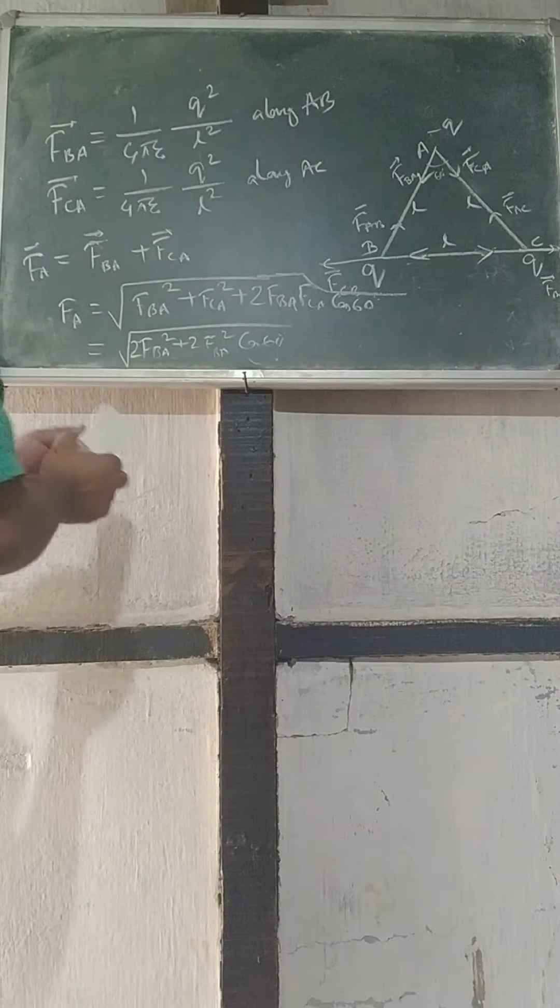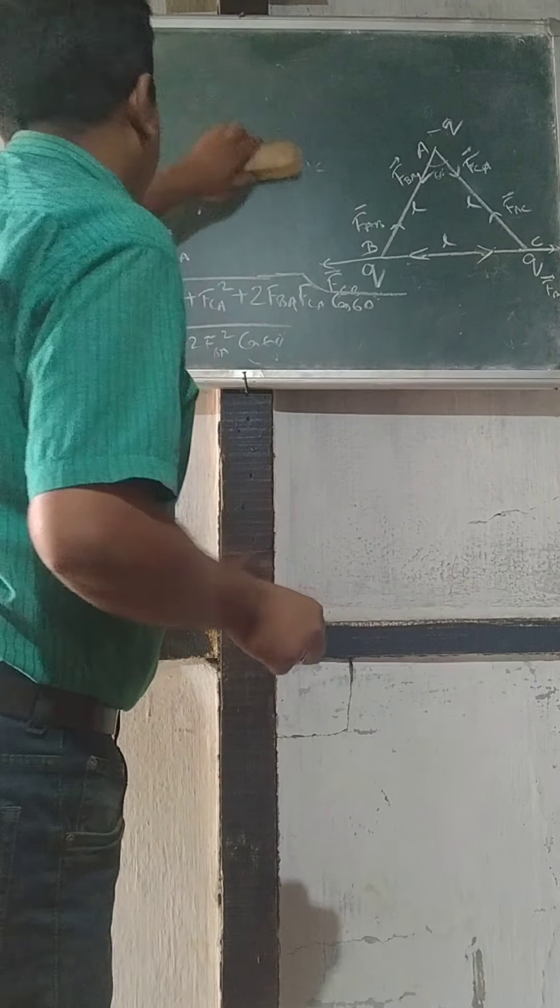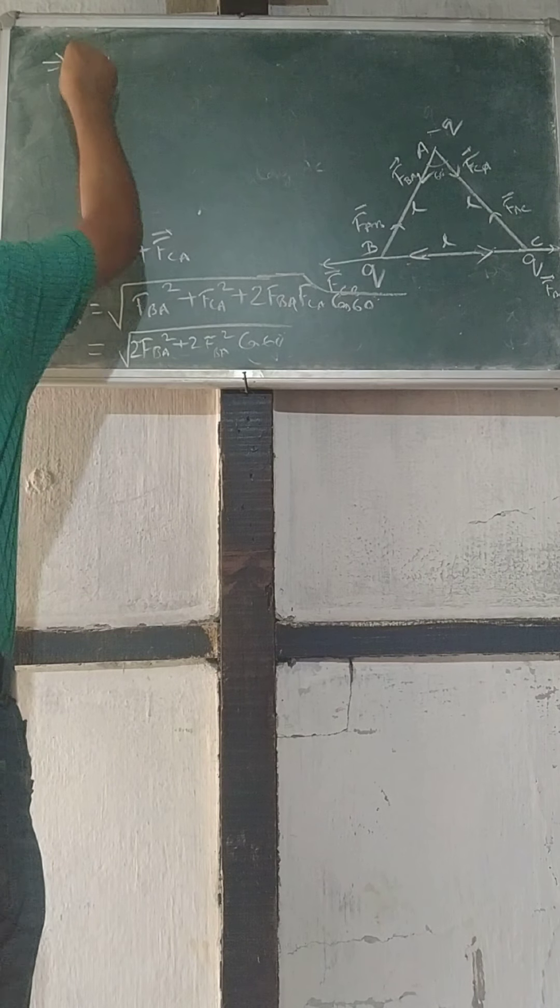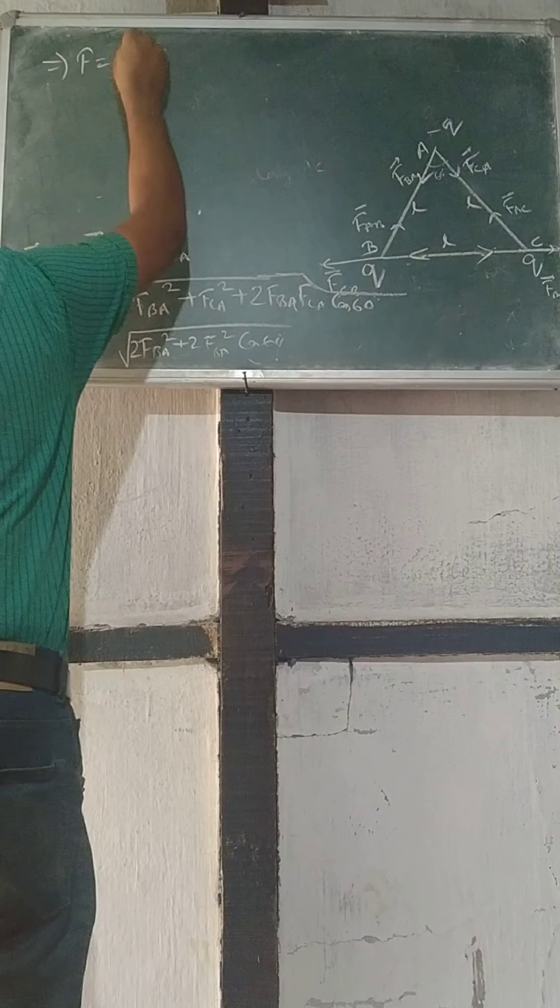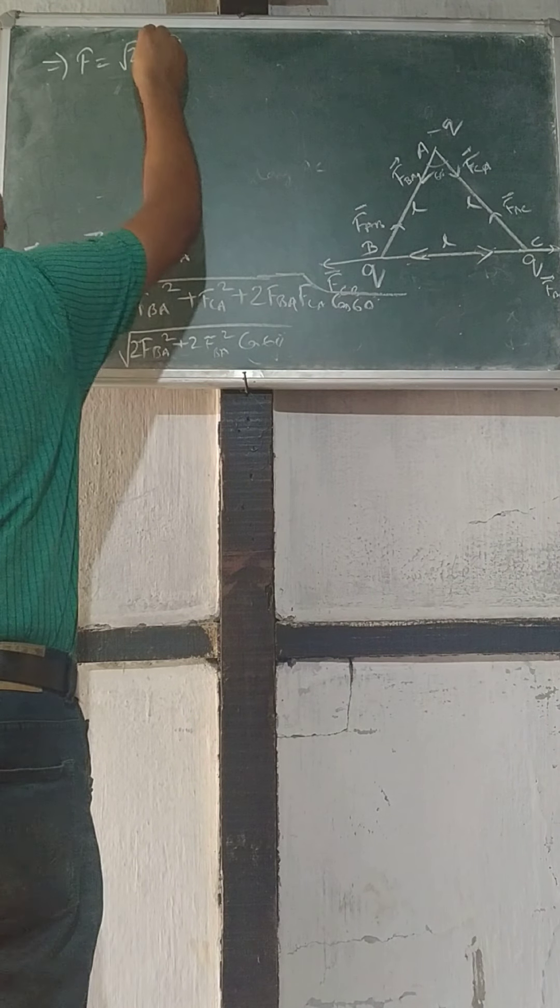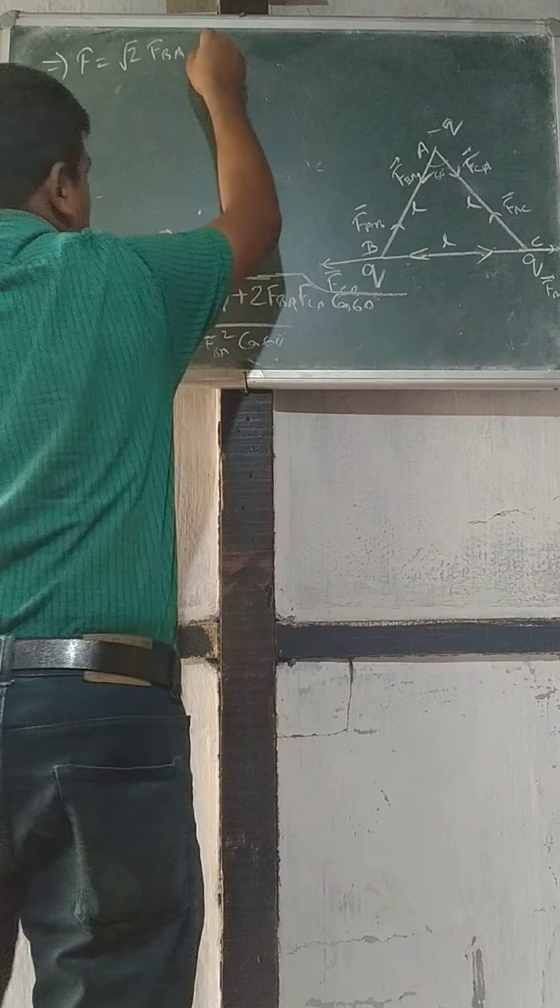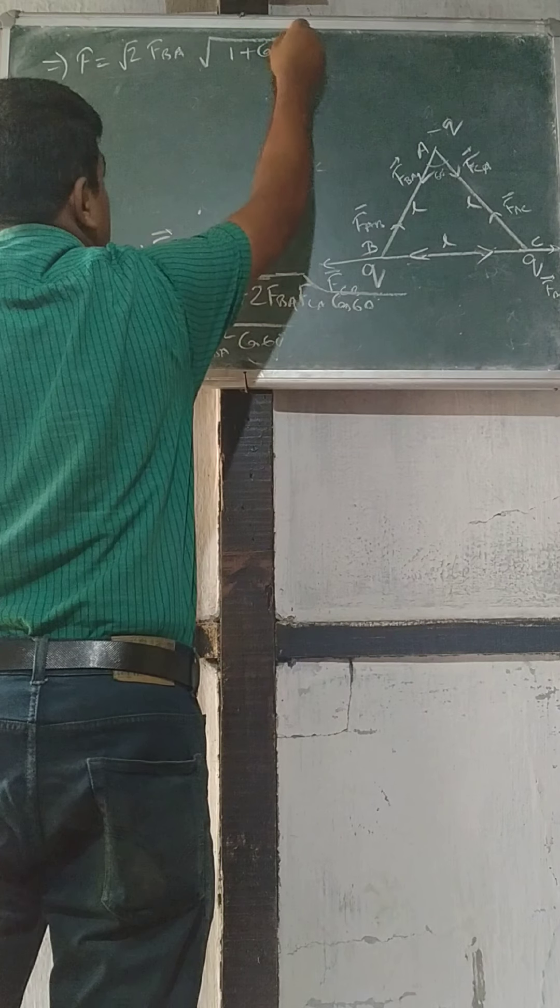Okay, so 2 FBA square. We can take this as common, which implies F is given by root 2 FBA into root of 1 plus cos 60 degree.